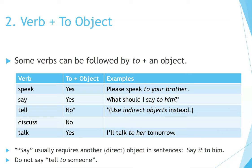Number 2: Verb plus 'to' plus object. Some verbs can be followed by 'to' plus an object. Speak — yes: Please speak to your brother. Say — yes: What should I say to him? Tell — no; use indirect objects instead. Discuss — no. Talk — yes: I'll talk to her tomorrow. Say usually requires another direct object in sentences: say it to him. Do not say 'tell to someone.'